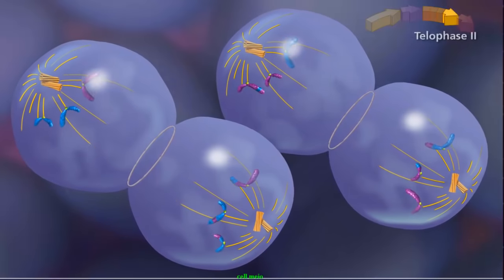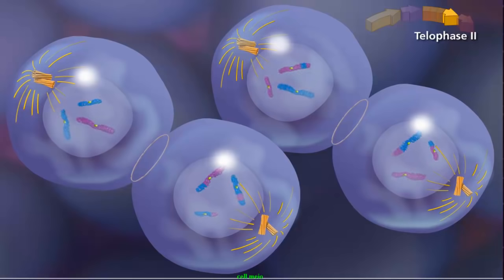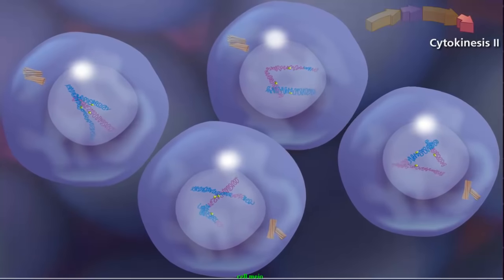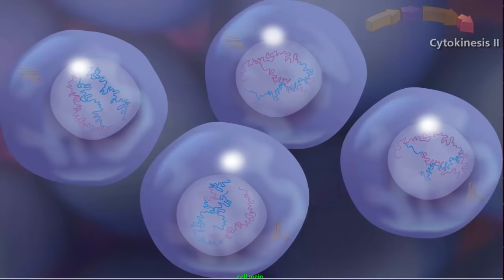The entire process ends with telophase II, as the chromosomes decondense and the nuclear envelope reforms. Cytokinesis occurs and cleavage furrows separate the two daughter cells into four haploid daughter cells.